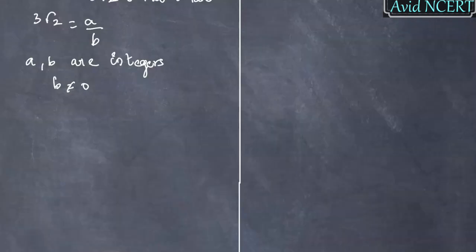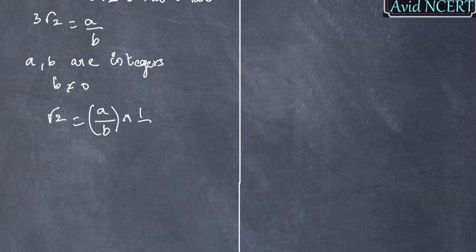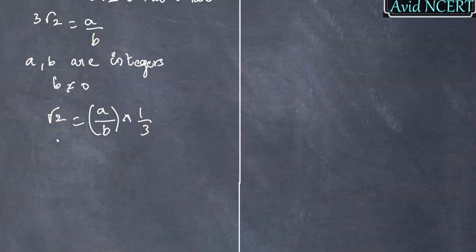Now let's bring √2 to the left-hand side and take the other term to the right-hand side. So √2 equals A by B into 1 by 3. This 3 comes down here, so it becomes √2 equals A by 3B.